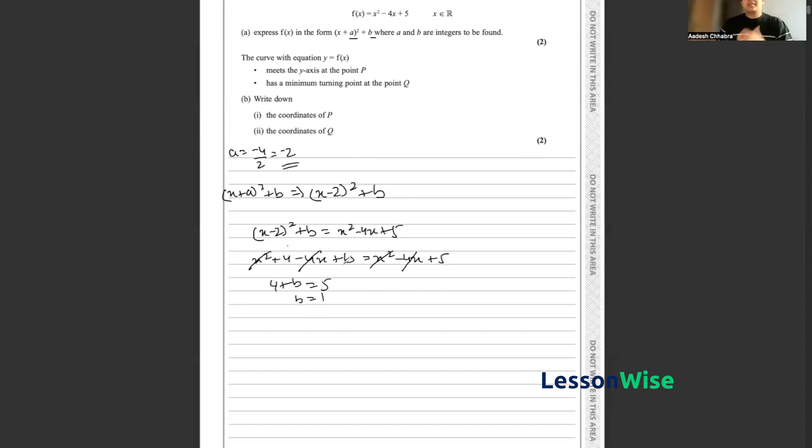We can thus substitute the values of a and b into the initial form to give f(x) = (x - 2)² + 1. That's part a done.